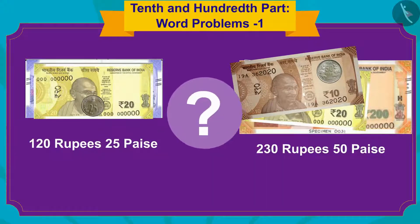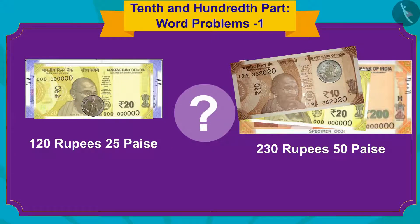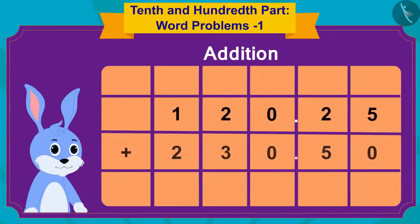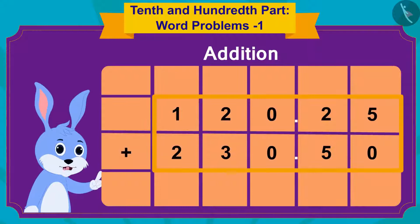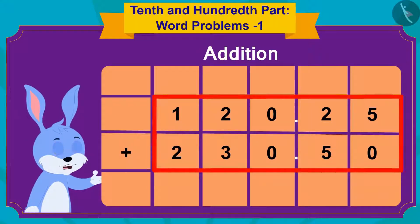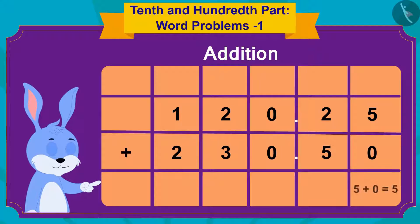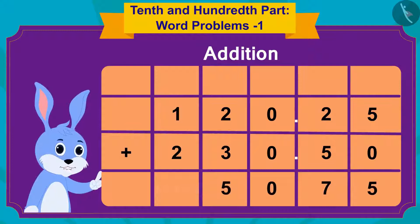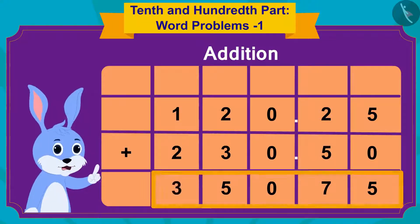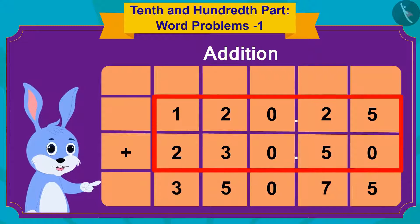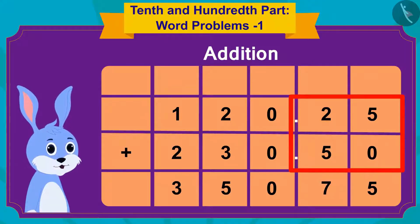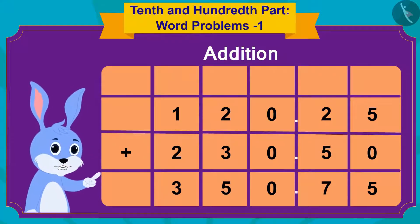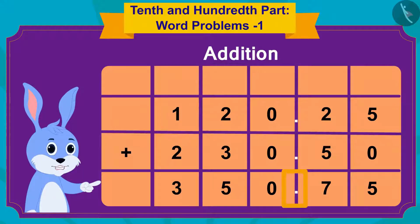Now, how much money do I have in total? Bunny immediately wrote this addition on a paper. I will first do this addition like a simple addition. This gives me 35,075. Now, because both these numbers have two digits after the decimal point, I will write a decimal point in this way in the answer.